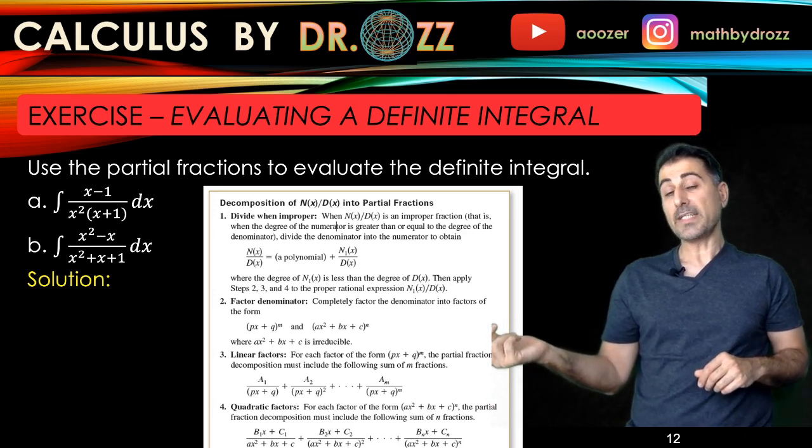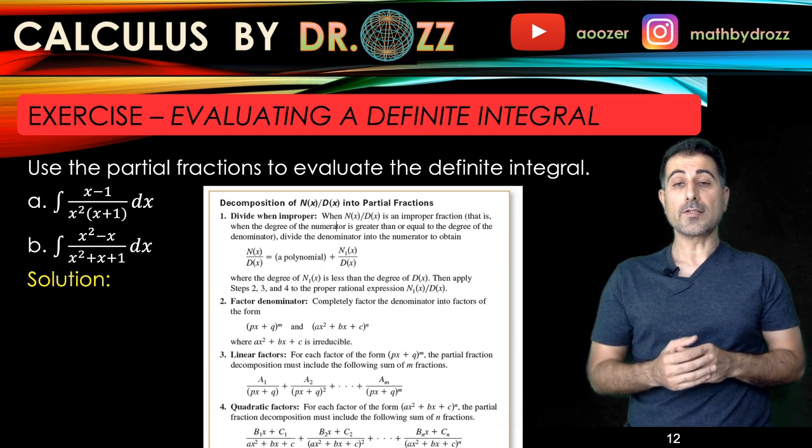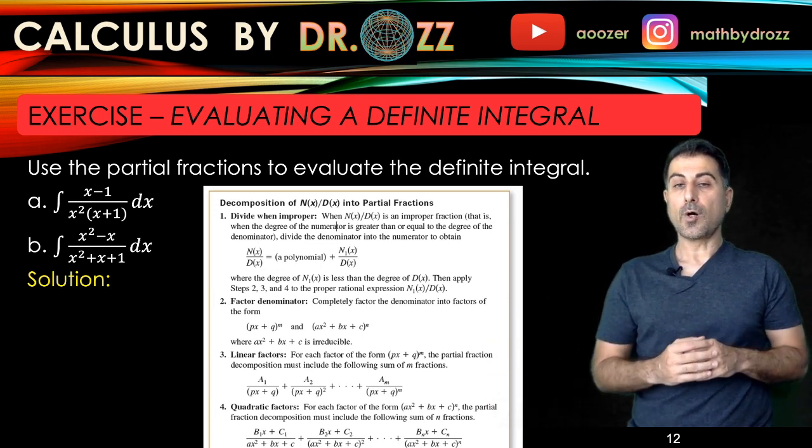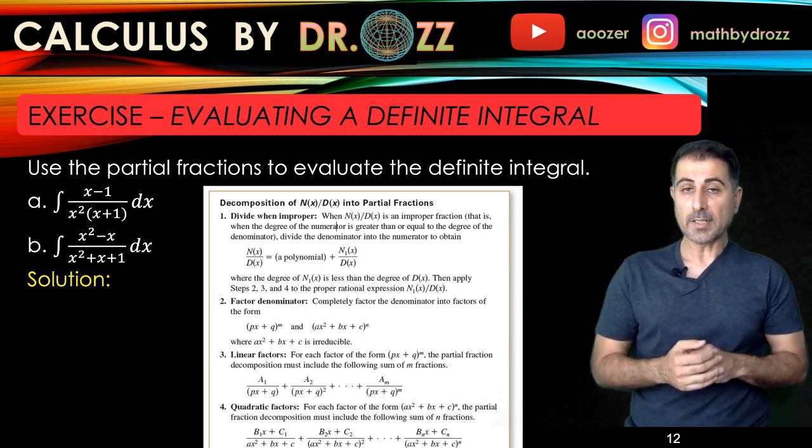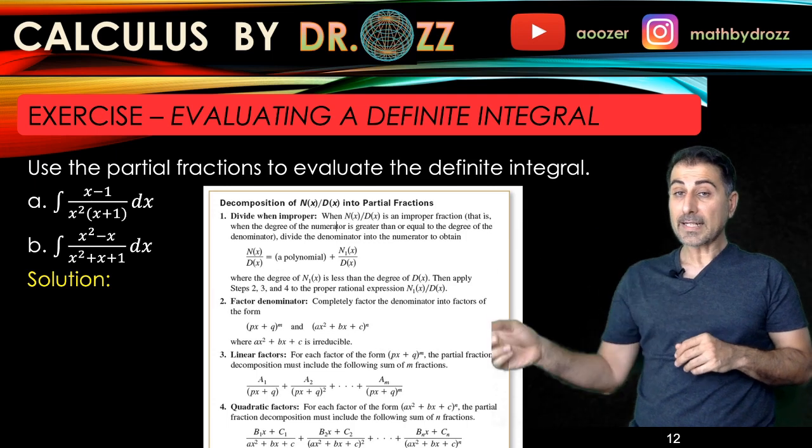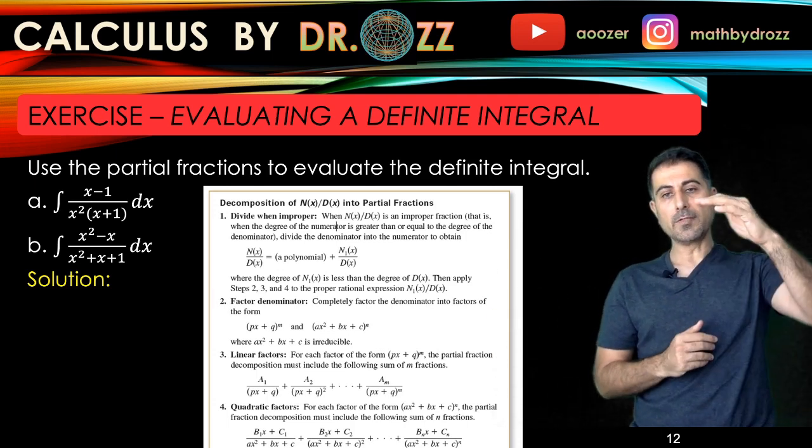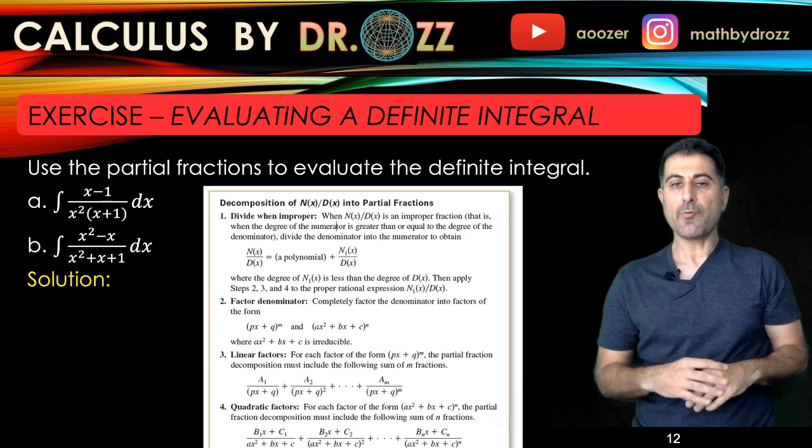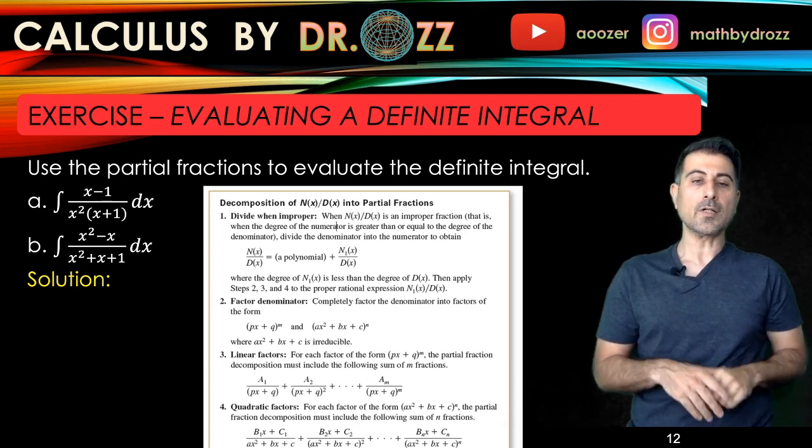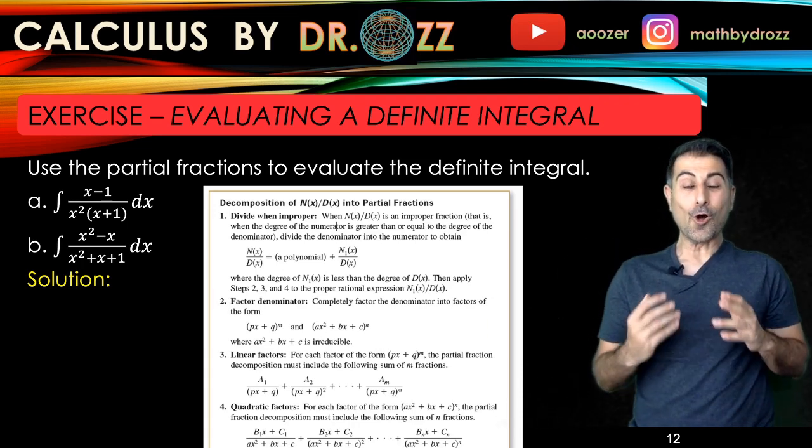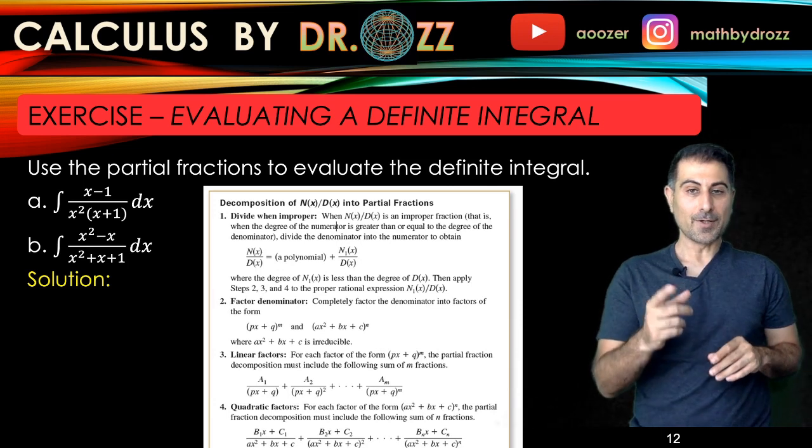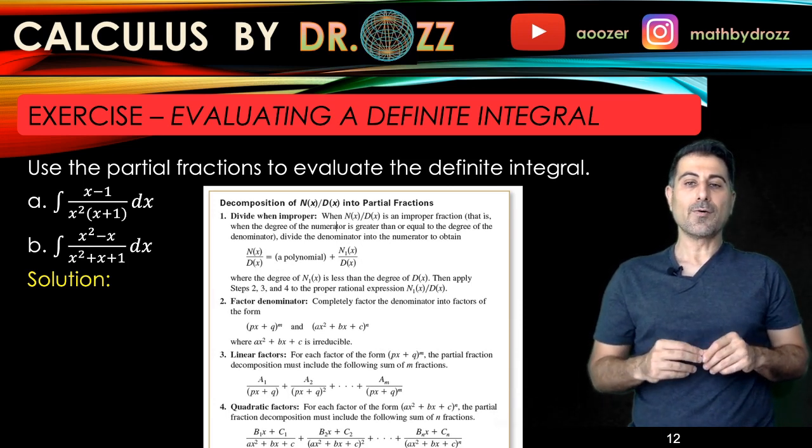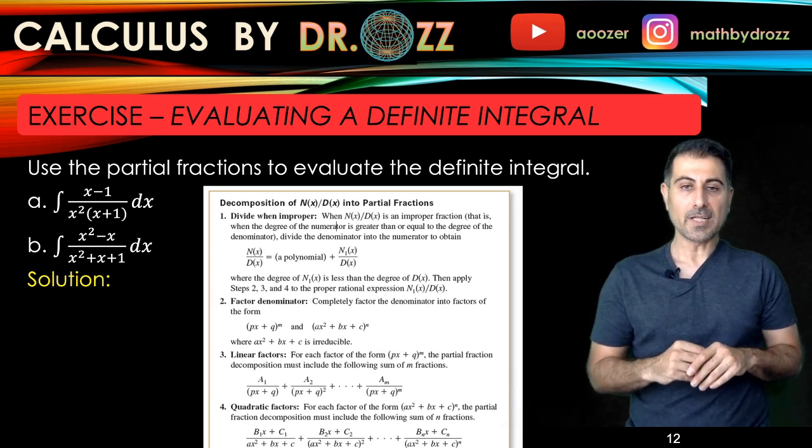So we call this process partial fractions. It's essentially decomposition of the rational function into partial fractions. When you're given a rational function, first thing to check is the degree of the top and the degree of the bottom. So if you decide that degree of the top is greater than or equal to the degree of the bottom, then you have to rely on the long polynomial division.